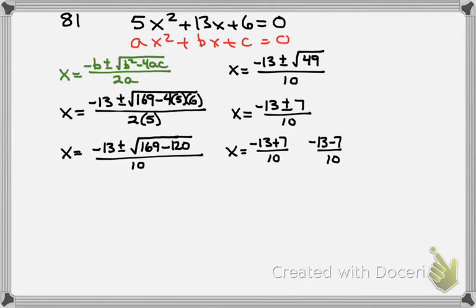So negative 13 plus 7 would be negative 6, divided by 10.